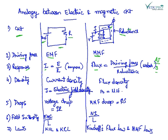Now the density: the current density in case of electric circuit is J equals electric field density upon rho, where rho is the resistivity. And here the flux density is B which equals mu H.